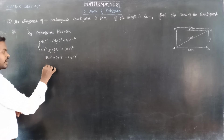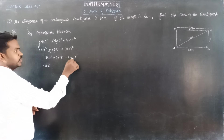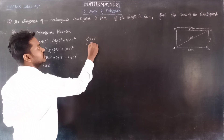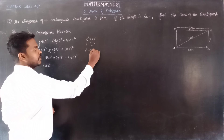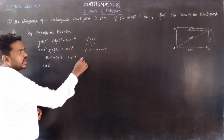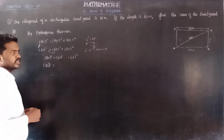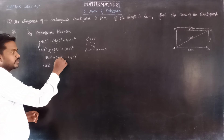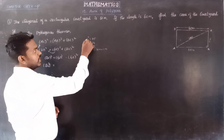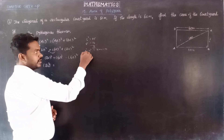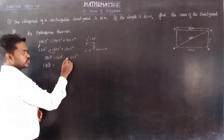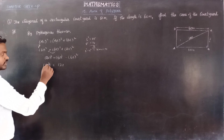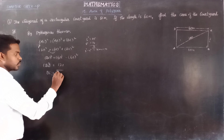Now, for the difference of squares, we use the identity a² − b² = (a + b)(a − b). For example, 5² − 4² = (5 + 4)(5 − 4) = 9 × 1 = 9. Similarly, 61² − 60² = (61 + 60)(61 − 60) = 121 × 1 = 121. So BC² = 121.